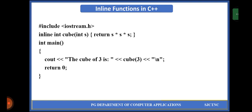Here we can see a small program that illustrates the inline function. We include iostream.h for input-output stream. Then we are defining the inline function before the main method using the inline keyword, followed by return type integer, then function name as cube, with argument integer s. While executing this function, it returns the cube of s, that is s into s into s.